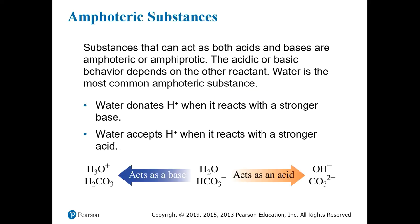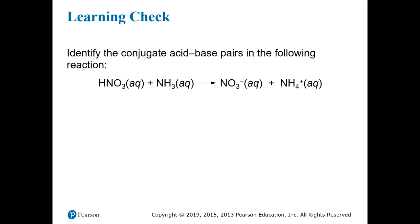We've seen a couple of examples of substances that can act as both acids and bases depending on the context or the other substances they're interacting with. These substances are called amphoteric or amphiprotic. Water is the most common amphoteric substance because water can donate hydrogen ions when it reacts with a stronger base, or it can accept hydrogen ions when it reacts with a stronger acid. When water acts as an acid, it gives away a proton and becomes OH-. When water acts as a base, it accepts the proton and becomes H3O+. HCO3-, the bicarbonate ion, is another such substance: it can either act as an acid by giving away its last remaining proton to become CO32-, the carbonate ion, or it can accept a proton to become H2CO3, which is carbonic acid.